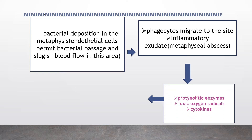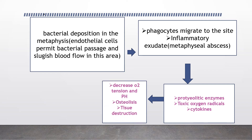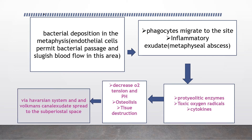Proteolytic enzymes, toxic oxygen radicals, and cytokines cause decreased oxygen tension and pH, osteolysis, and tissue destruction. Via the Haversian system and Volkmann's canals, the exudate spreads to the subperiosteal space. This is the mechanism by which bone damage occurs in osteomyelitis.